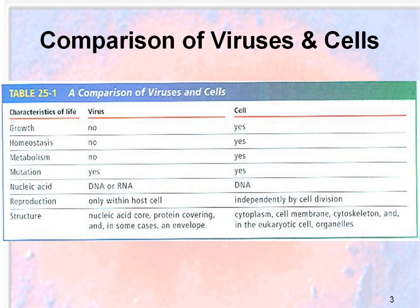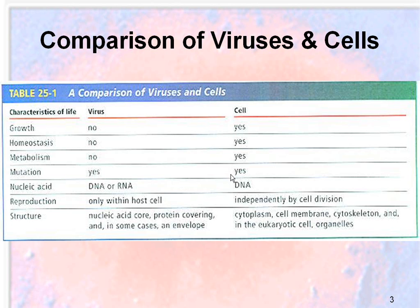This is a table from a different textbook that shows a comparison of viruses and cells. On the left are the characteristics of life: growth, homeostasis, metabolism, mutation, nucleic acid, reproduction, and structure. You'll notice that there are many things viruses don't have but cells do. For example, they don't get larger, they cannot maintain homeostasis, and they don't really metabolize. Yet they can mutate because they contain either DNA or RNA as their nucleic acid. Cells contain all of these things because they're required to be alive.